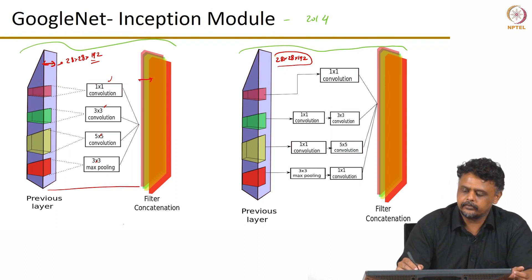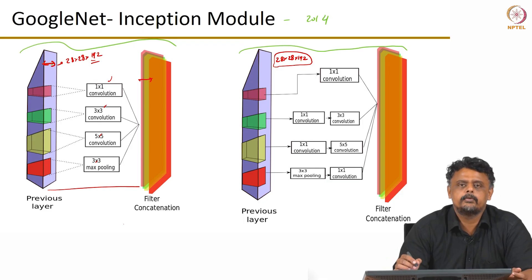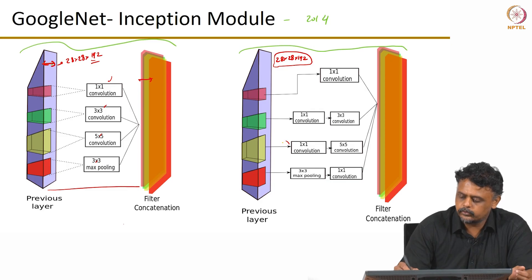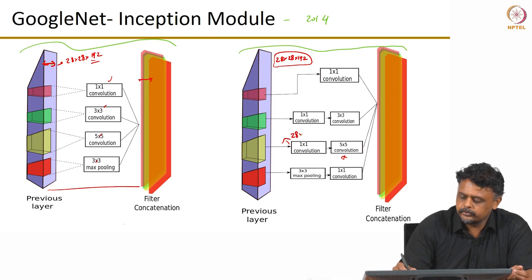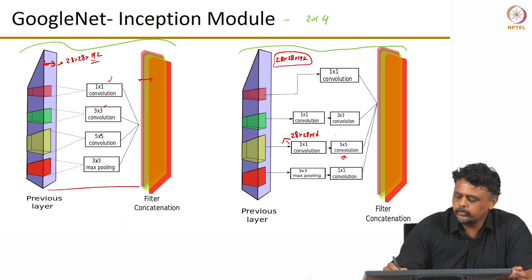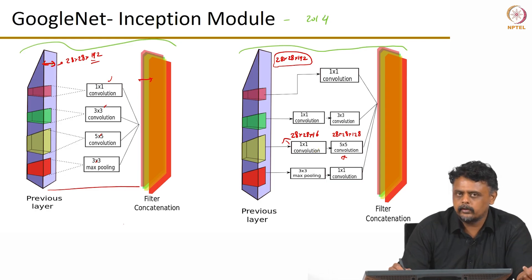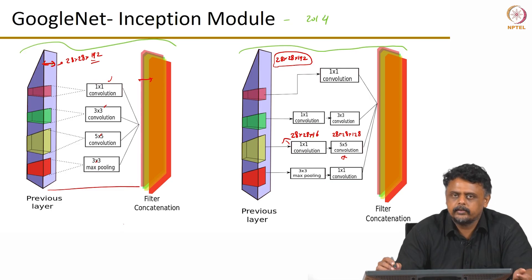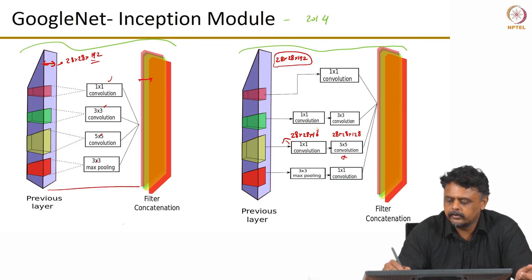So if you have a very large number of feature maps in the input volume, you would use 1x1 convolution to bring it down. For instance, we can use the 1x1 convolution before the 5x5 to reduce the feature maps from 192 to 28x28x16, and then output 28x28x128 feature maps from the 5x5 convolution. This is done by defining 16 1x1 convolution filters that act across the volume. Whether this leads to loss of information is a parameter that has to be tuned by cross-validation.